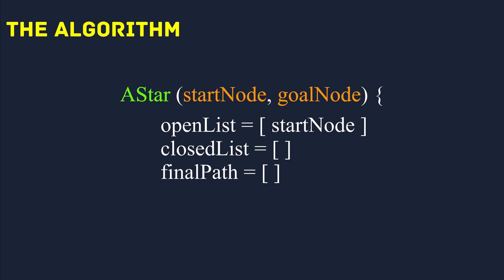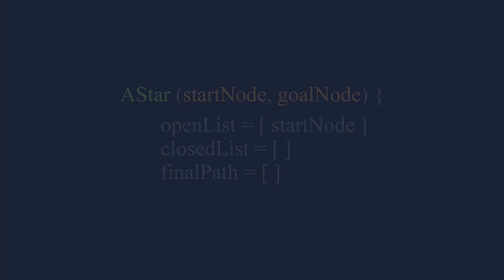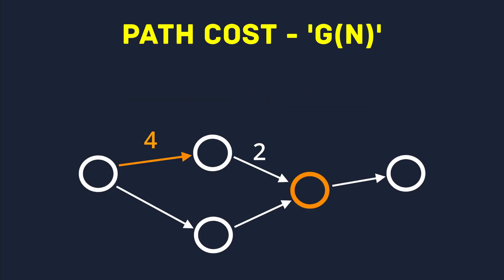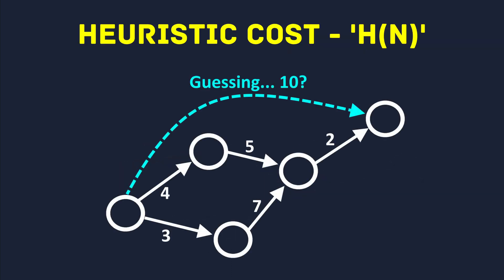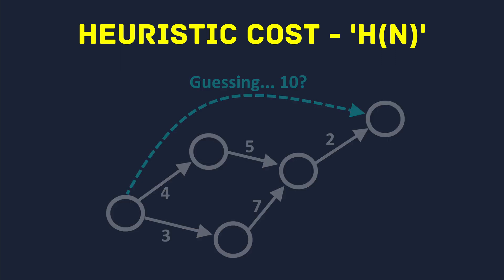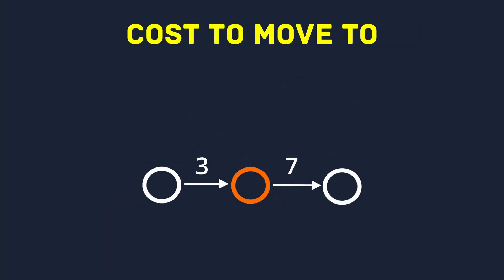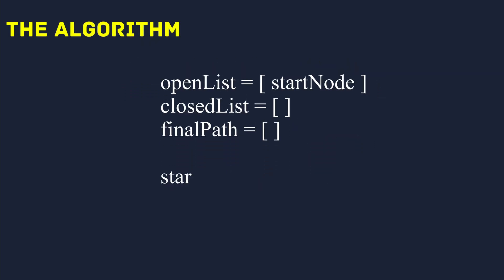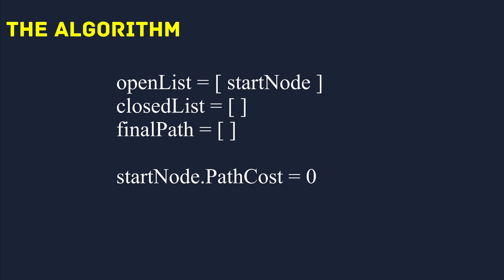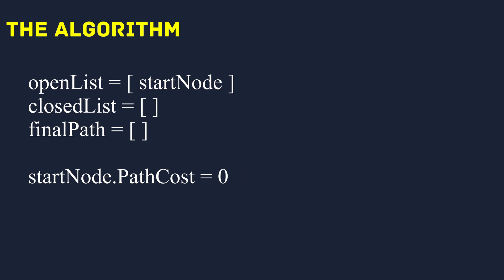During traversal, we need to ensure we know exactly how expensive each node is to reach from the start. So each node has three attributes: a path cost, which is the sum of the cost of edges from the start node to that node; a heuristic cost, which is an estimate for the minimum cost between the current node and the goal node; and a cost to move to, which is how expensive the edge is from the previous node to the given node. Before we begin traversing the graph, we will set the start node to have a path cost of zero, since we start there and the cost of reaching it is nothing.